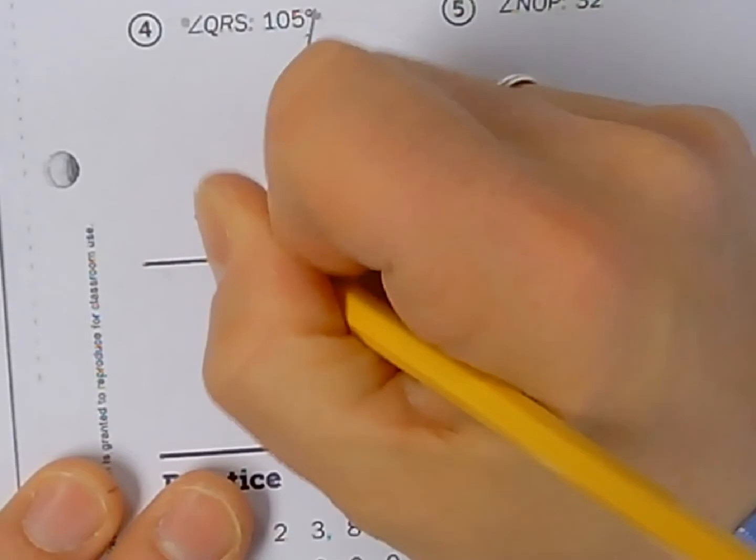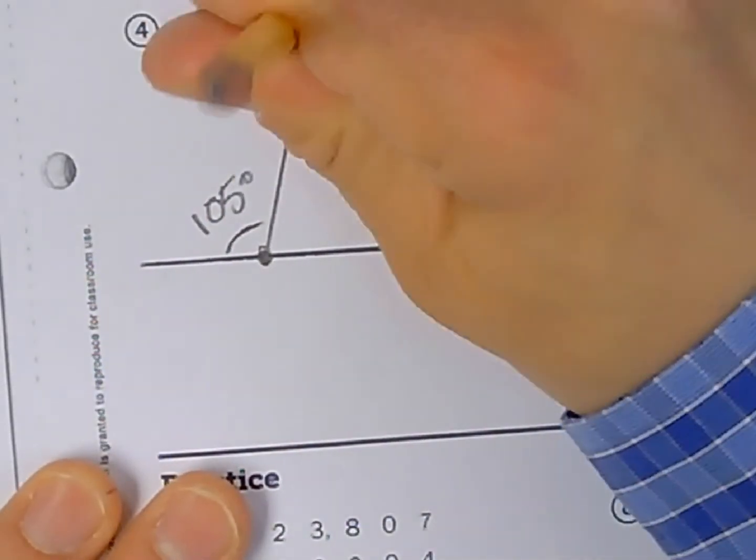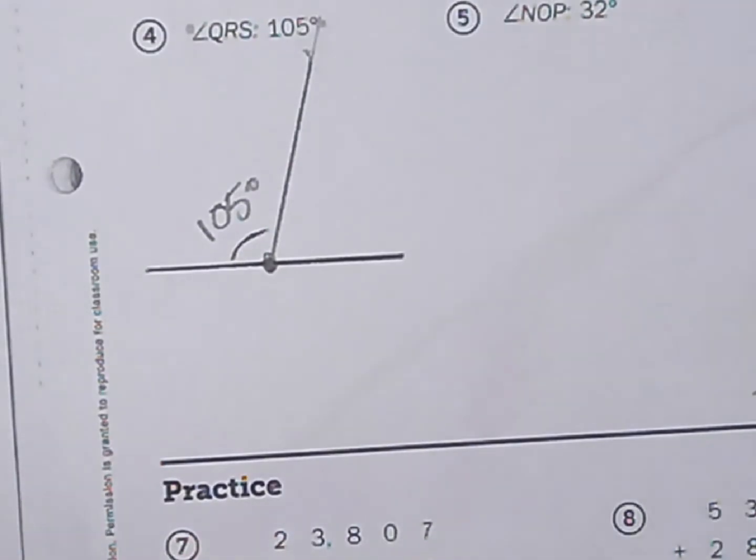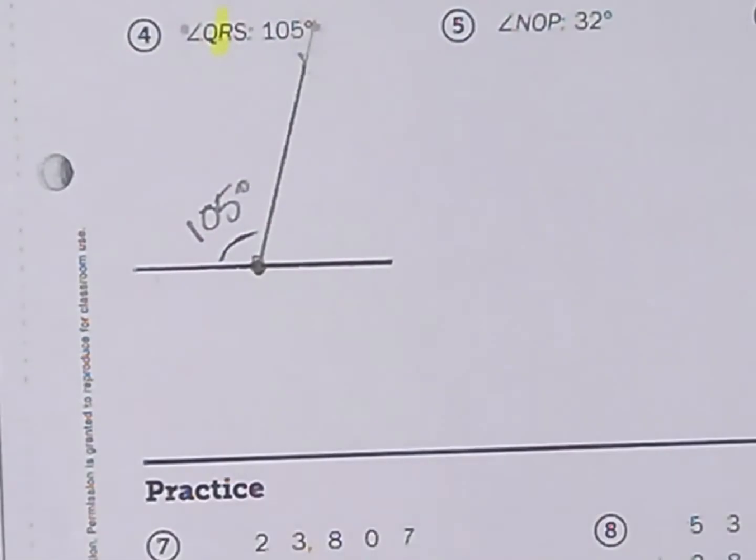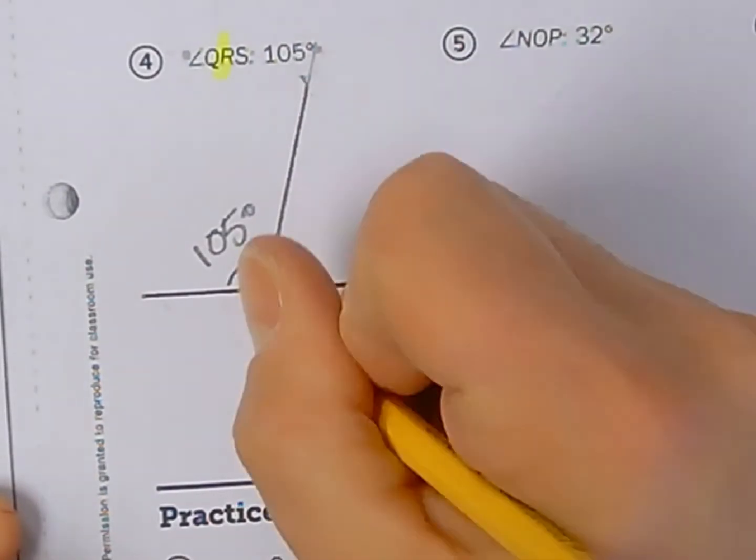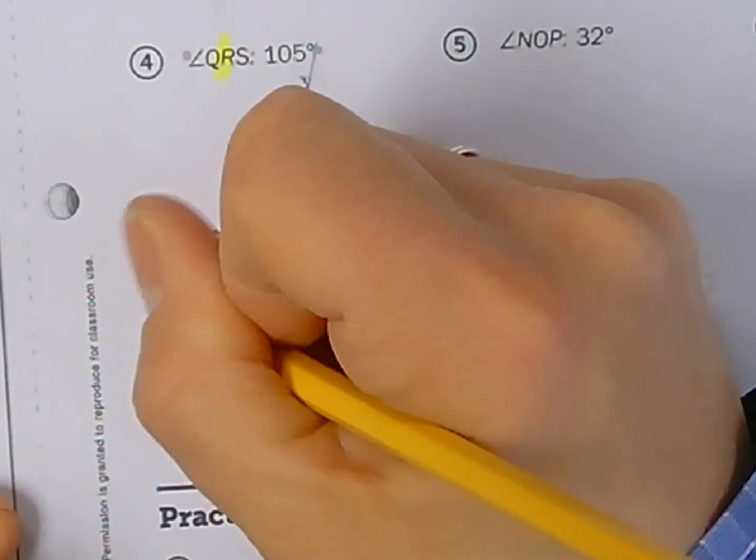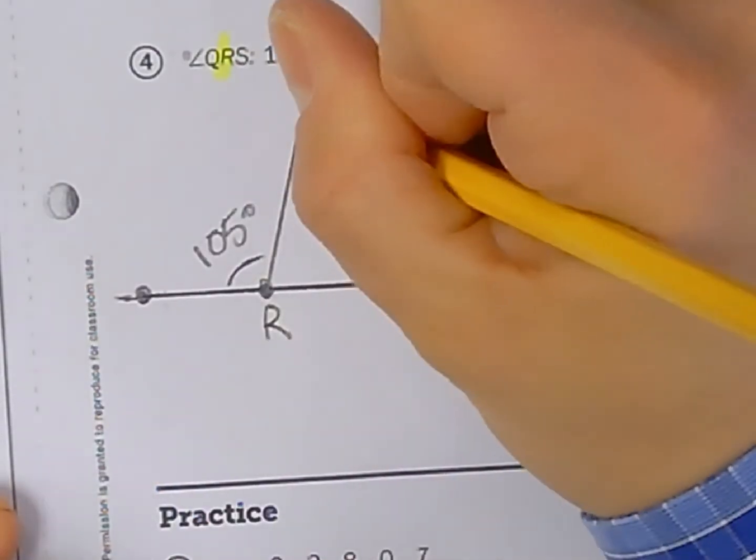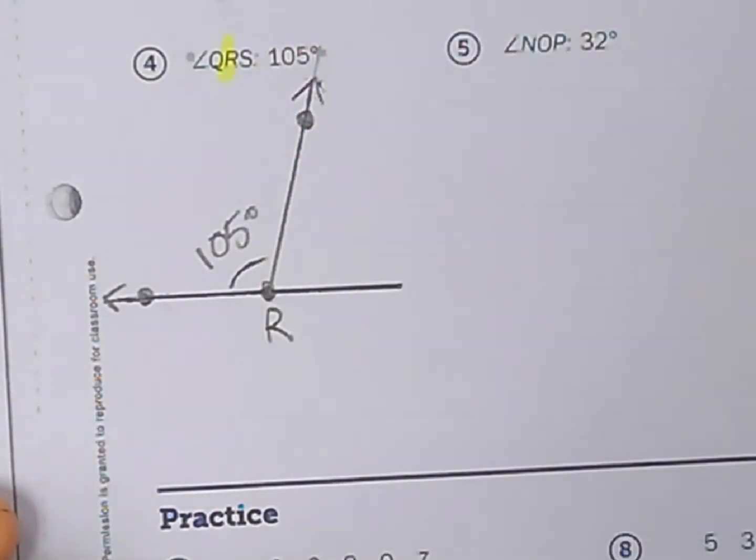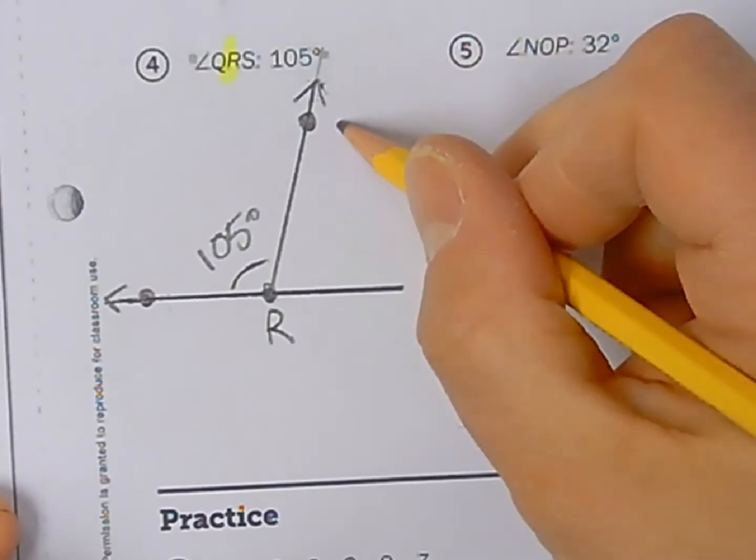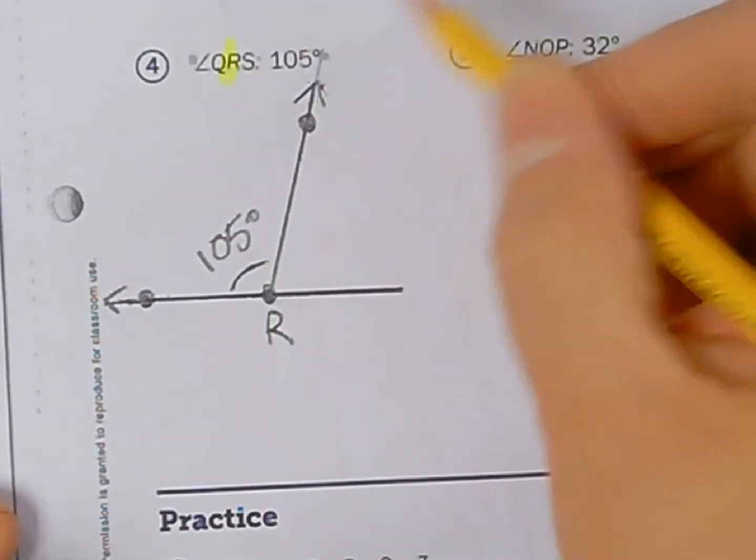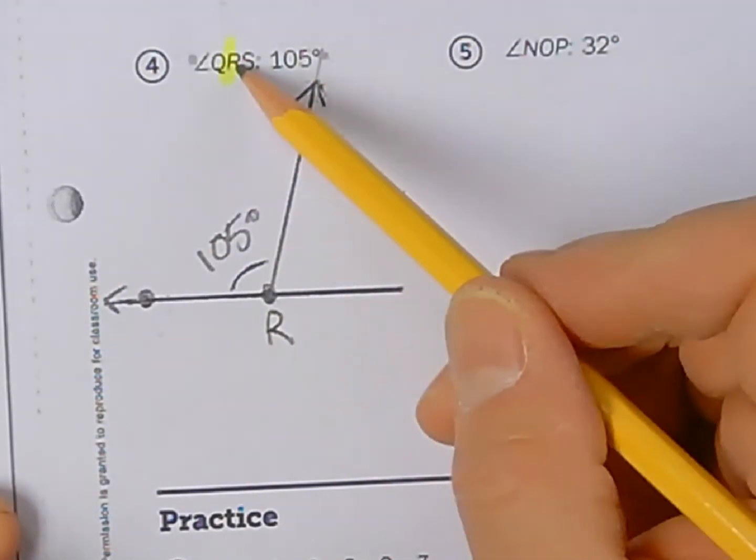Now they want you to label this angle as QRS. So the vertex is always going to be the center letter or the middle letter the R. So I got to label this point which became a vertex once I added another segment to it. I'm going to label this R. And then I have to put two more points somewhere on each line segment. Let's make these rays. I'll just put a little arrowhead on each. Now I can label this one Q and this one S or I could label this one Q and this one S. The orientation of those letters does not matter so long as the center letter R is the vertex. But since we read from left to right I'm going to label it that way. QRS.